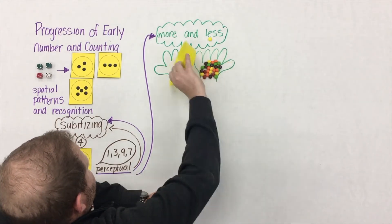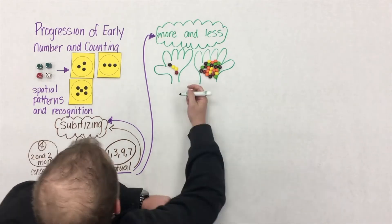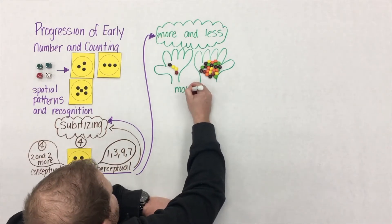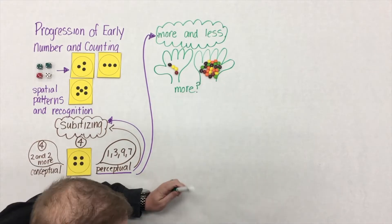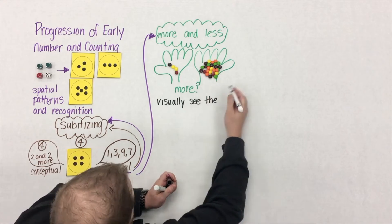and then we were to ask a student, which one has more? I think most students are going to say the one on the right has more. And they're able to recognize this because they can visually see and compare the difference.